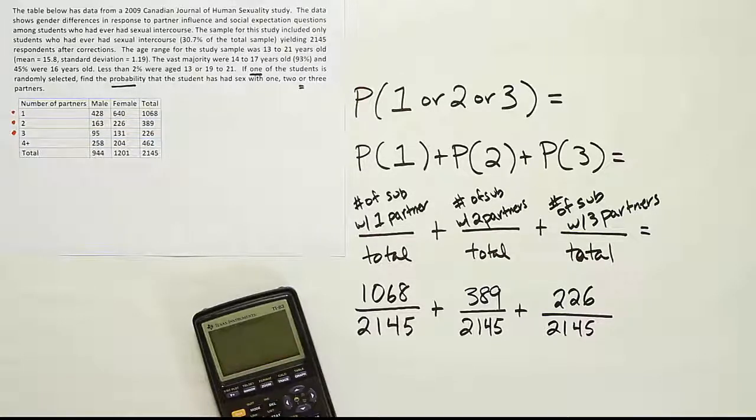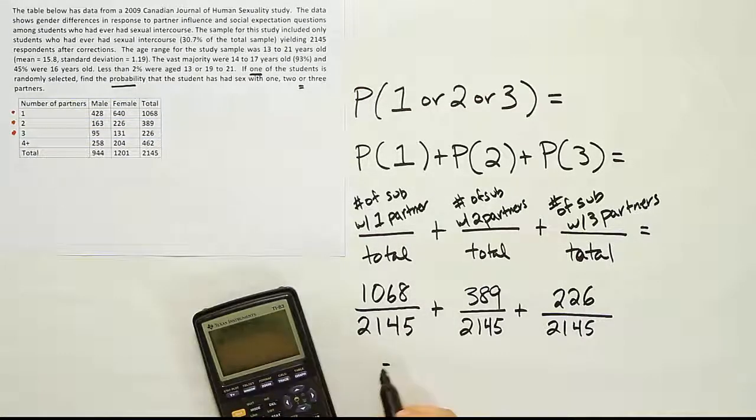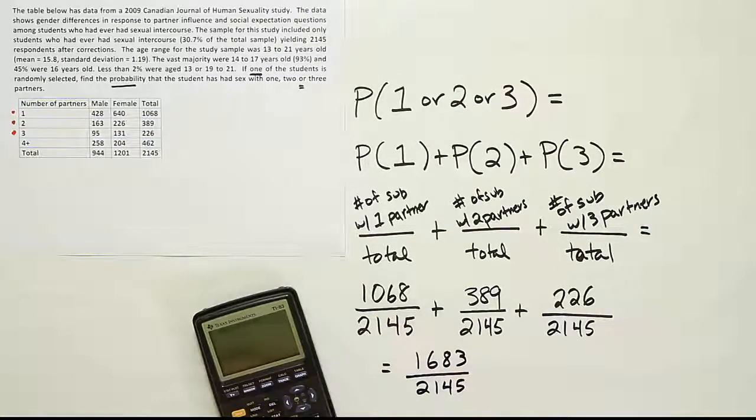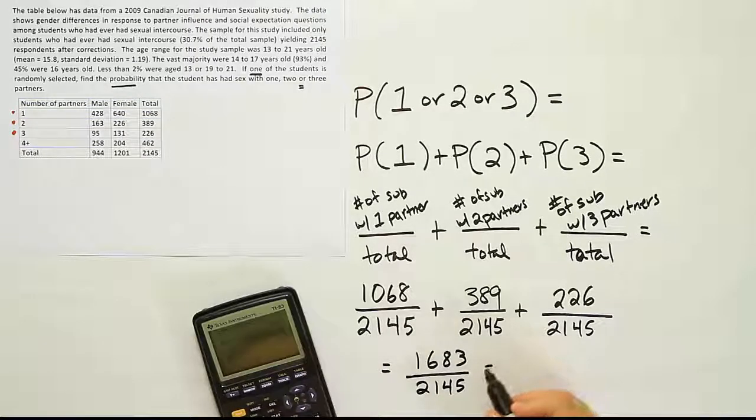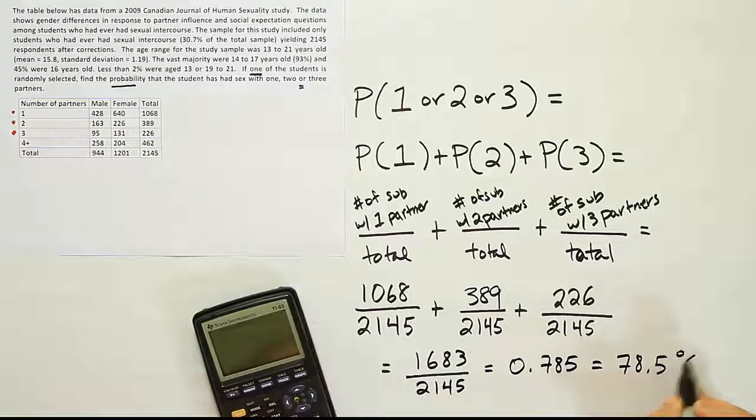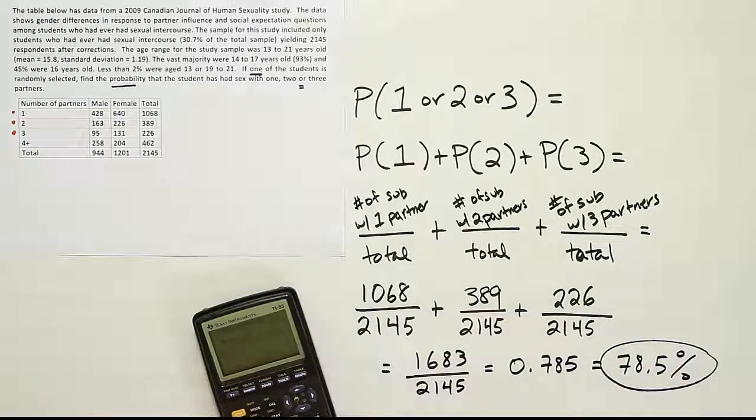Adding all the numerators together, bring them over the common denominator. 1,683 divided by 2,145. And when I do that division, I get 0.785, or basically 78.5%. And that's it.